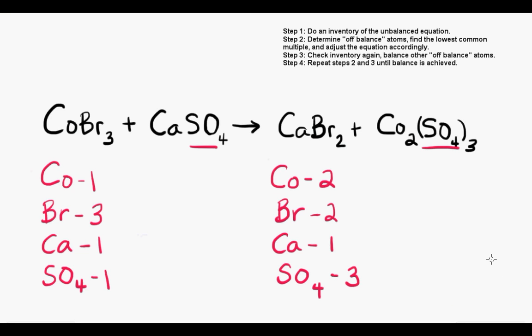Comparing the inventory on the left and right side of the equation shows us that cobalt, bromide, and sulfate are all off balance. So now we face the ever-challenging decision of which element to balance first. If you remember from the intro video, we established balancing tip number one to begin with the more complex reaction participant.